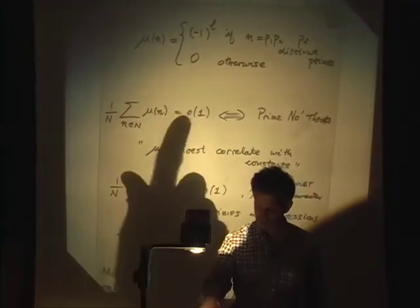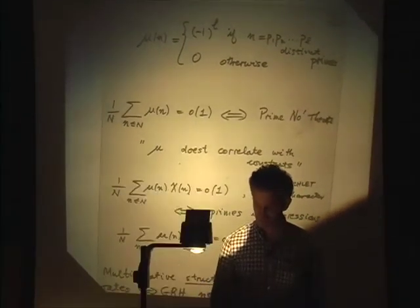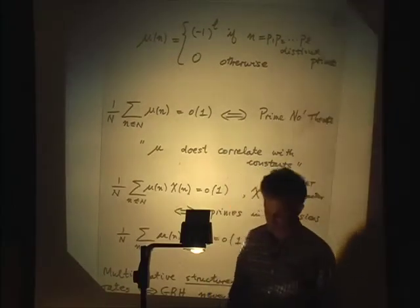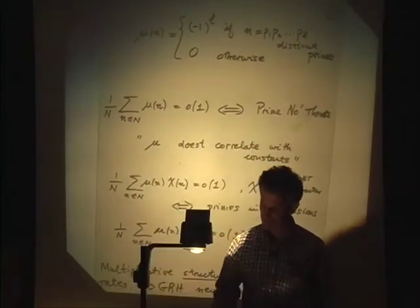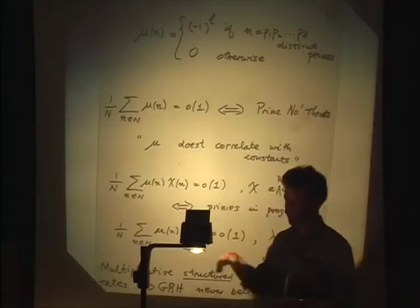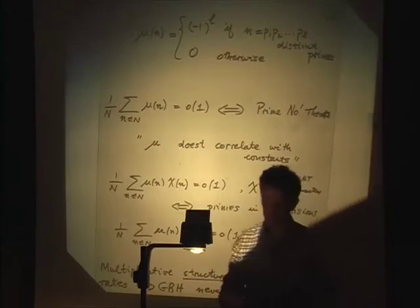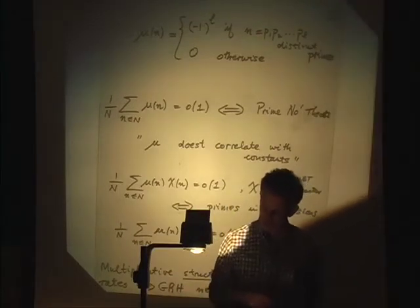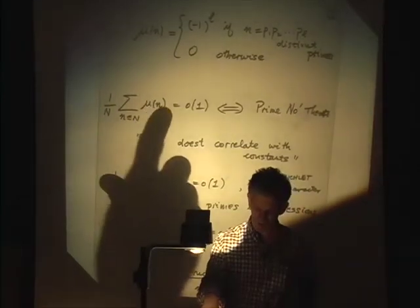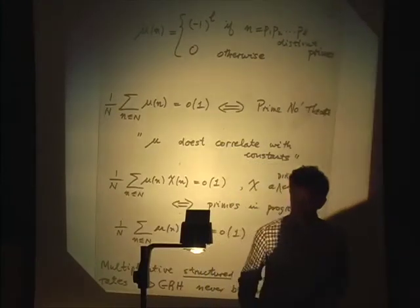This function carries information about primes. I want to discuss what Möbius is correlated with. Suppose I take the sum of mu(n) for n up to N, divide by N. This is clearly at most 1, since mu is at most 1. This sum going to 0 is well known to be equivalent to the prime number theorem — not a triviality, but known for many years.